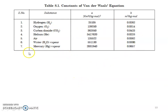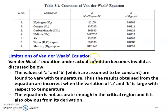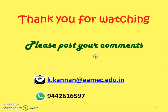There are some limitations of Van der Waals equation. The values of a and b, which are assumed to be constant, are found to vary with temperature, so the results from the equation are incorrect when the variation of a and b with temperature is large. Also, the equation is not accurate enough in the critical region. These are the limitations of Van der Waals equation. Thank you for watching. In the next lecture, we will continue with real gas properties. Until then, bye.